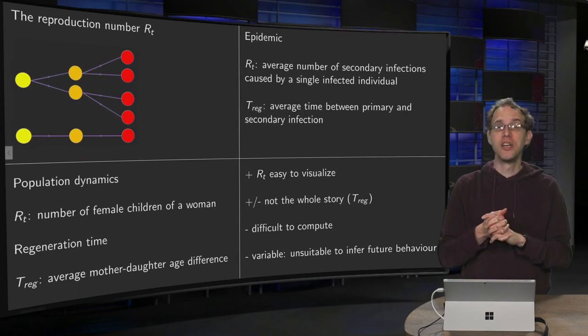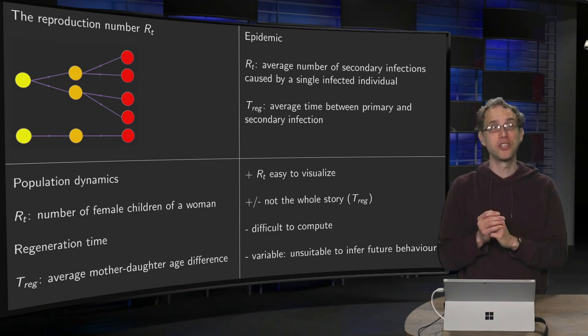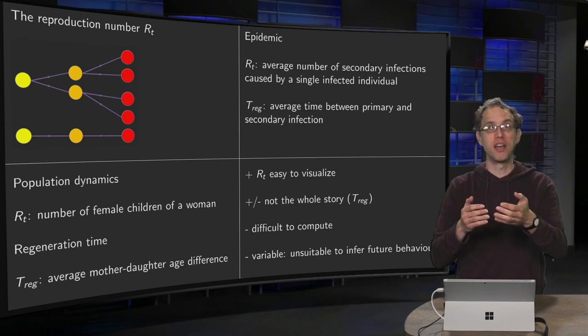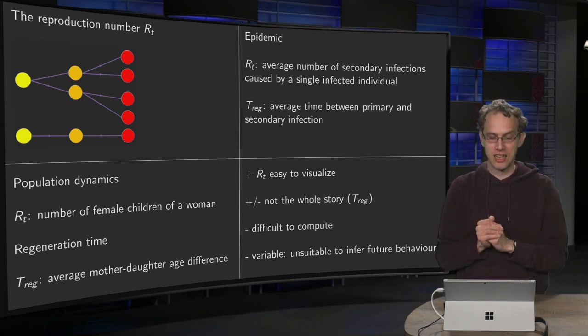Now some small discussion. This RT, this reproduction number, has some advantages, but also some big disadvantages. First of all, it's nice because it's easy to visualize. For everybody, it's clear what's happening. If your RT is bigger than one, you're going to explode because you get more and more infectees. So that's a clear advantage.